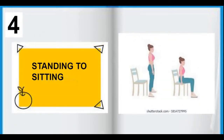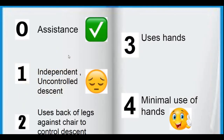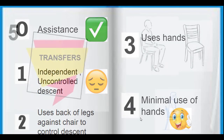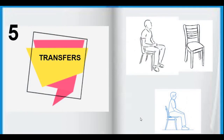The fourth task is standing to sitting. The patient needs to go from the standing position to the sitting position. If they cannot do it independently and require full assistance, we give a score of 0. If they can perform standing to sitting with minimal usage of hands independently, we give them the maximum score of 4.